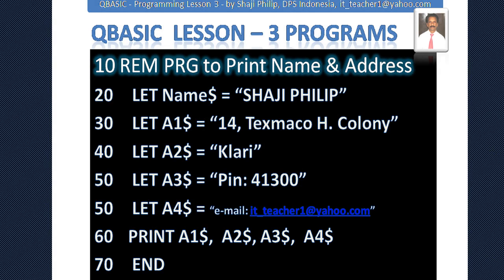The same program from the previous video can also be done another way. You can store the values — name, address, pin code, street, email ID — into variables. Notice that at the end of each variable name there is a dollar sign ($). We use this dollar sign for string variables. A string variable stores string values or text, not numbers.